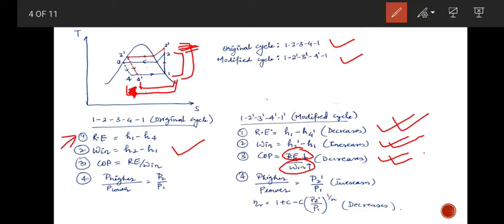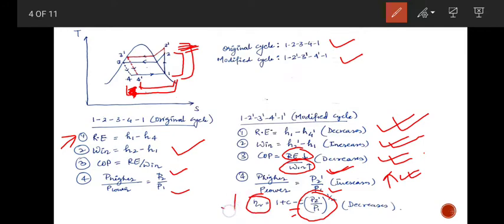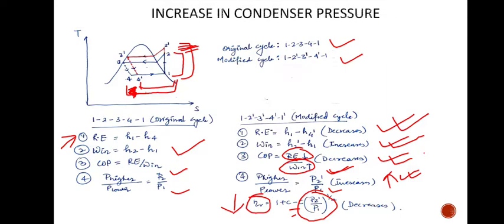For the pressure ratio, Pc2 is the modified condenser pressure which is higher, so with the numerator increasing and denominator the same, the pressure ratio increases. With the pressure ratio increasing and appearing as a negative term in the volumetric efficiency expression, the volumetric efficiency will decrease. You can compare that the effects of decreasing evaporator pressure and increasing condenser pressure are the same in terms of direction of change of all parameters.